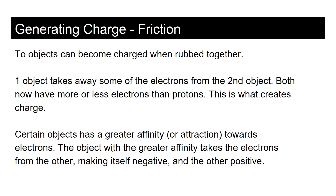Protons are in the nucleus of the atom, and it takes a lot of energy to remove them. Electrons, on the other hand, are on the outside in the electron cloud — they float around freely. So when you charge something, you're either adding or removing electrons.